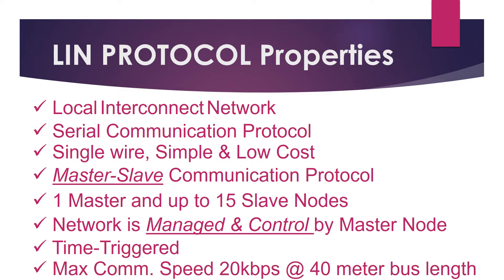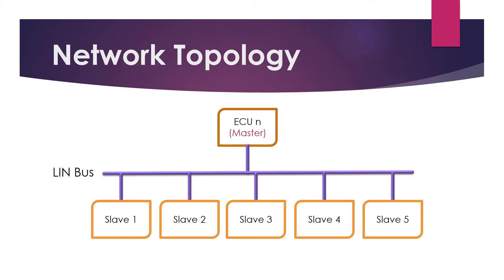A maximum of up to 20 kbps communication speed can be achieved with a 40-meter overall bus length. LIN is a broadcast serial network where all messages are initiated by the master with at most one slave replying to the given message identifier. The master node can also act as a slave by replying to its own message.